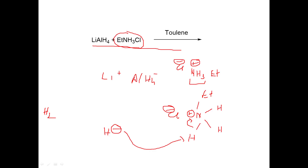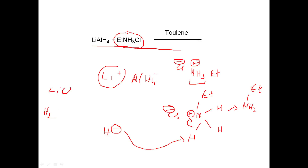The second product: the hydrogen donates electrons back to the nitrogen, so nitrogen is no longer positively charged — it becomes neutral with three bonds. We get NH₂Et. Additionally, the Li⁺ and Cl⁻ will interact and form an ionic bond, precipitating out as lithium chloride, LiCl. The solvent is toluene, which is aprotic — no ionizable hydrogens — so it does not react with the reagents.